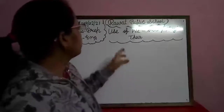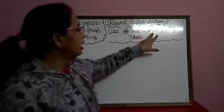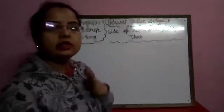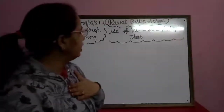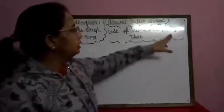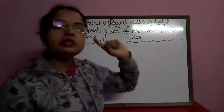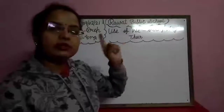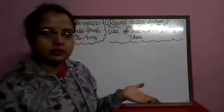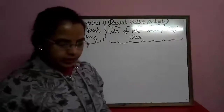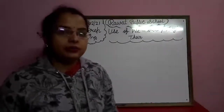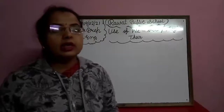We will learn the use of We, Our, They, Their. We — we ka kya hota hai? Hum. Our — Our ka matlab hamara. They — T-H-E-Y, they ka matlab voh (we). And Their — their ka matlab unka. We is plural of I. Jo we hai, wo I ka plural hai.